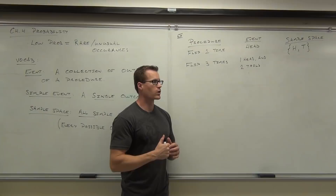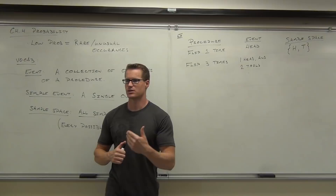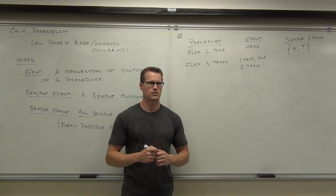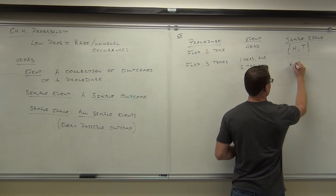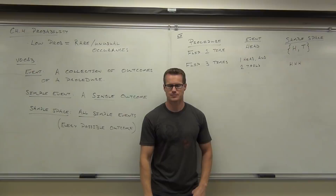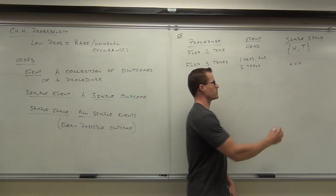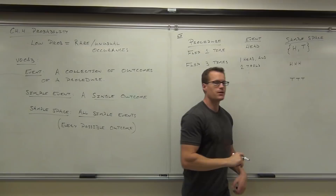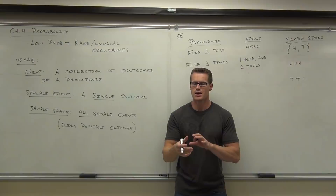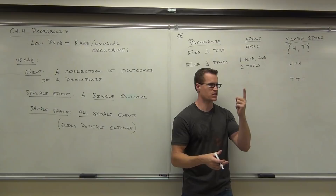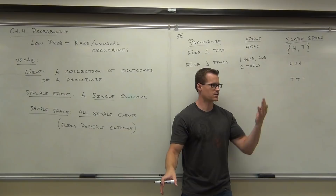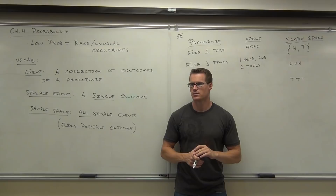Now we'll find each of the simple events — what could you get when you flip your coin three times? You could get three heads. You could get three tails. Those are simple events: single outcomes from flipping the coin three times. You can't get just a single head with no tails if you're flipping three times — you're going to get three distinct results each time, like head-head-head or tail-tail-tail.